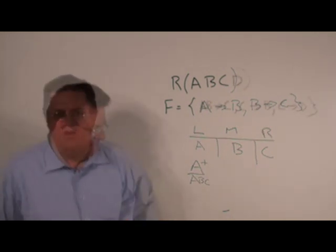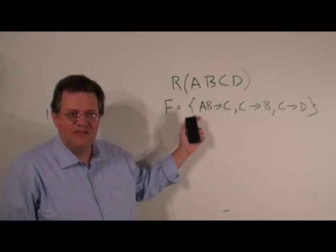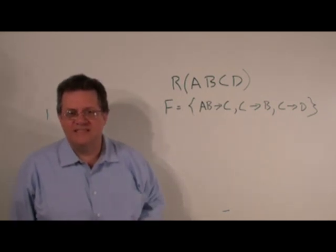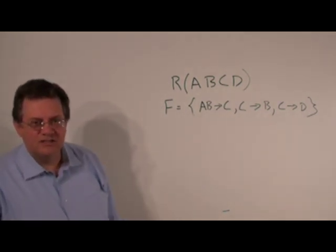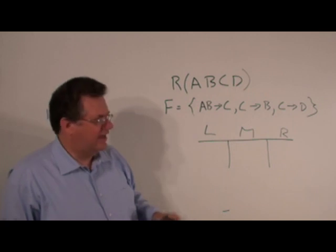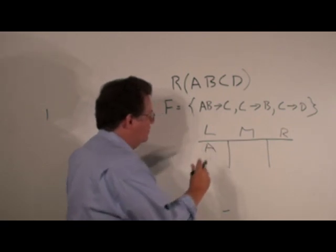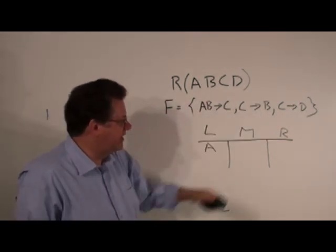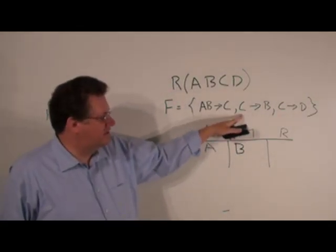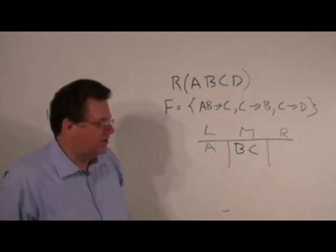Let's take a look at another example. We've got R(A, B, C, D) with functional dependencies AB determines C, C determines B, and C determines D. We draw a little table — left, middle, right. A is only on the left, so it goes in L. B is on the left and also on the right, so it goes in the middle. C is on the right and also on the left, so it goes in the middle. D only appears on the right, so it goes in R.